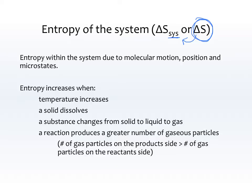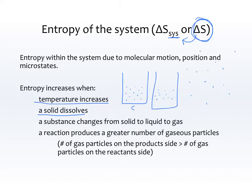Entropy increases when temperature increases, because molecules move faster and can be arranged in a more random order. When a solid dissolves — turning into a liquid — molecules go from being arranged in a neat crystal to moving more freely. In a gas, molecules move even more freely. Entropy also increases when a substance changes from solid to liquid to gas, or when a reaction produces a greater number of gaseous particles.